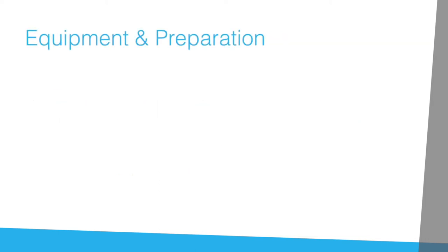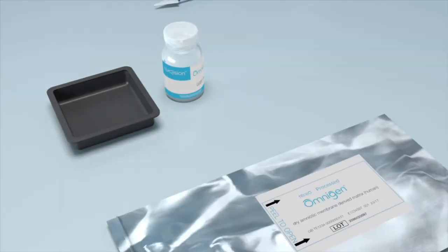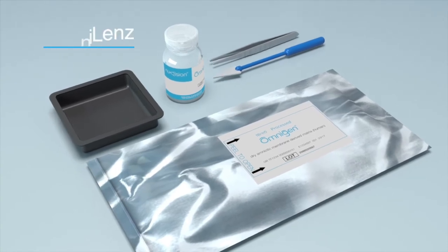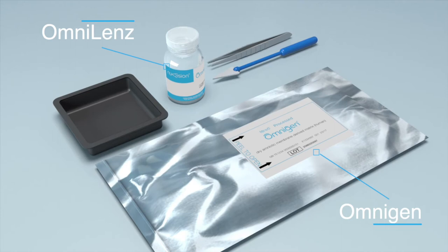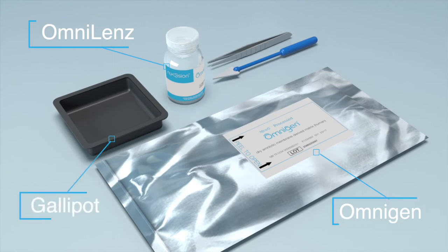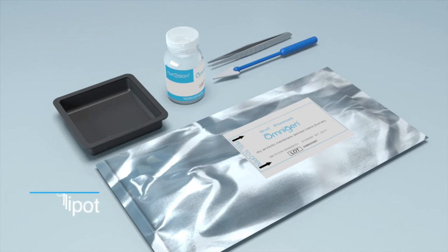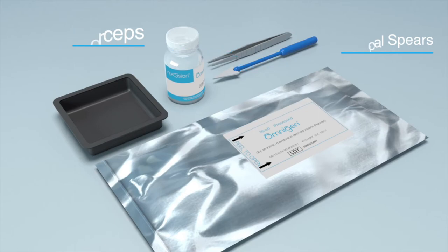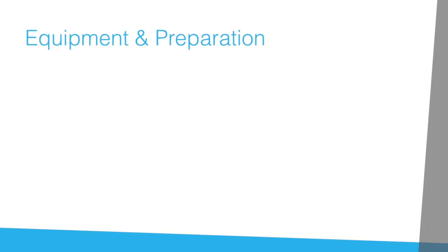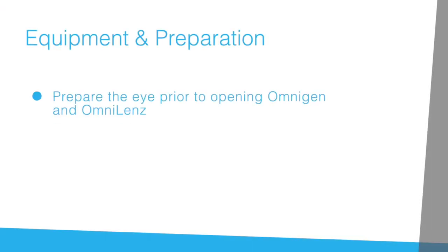So let's get started. To apply Omnigen using OmniLens, you will need: anaesthetic eyedrops, an OmniLens, an Omnigen disc compatible with your OmniLens, a small sterile gallipod, a pair of sterile non-toothed blunt forceps, and a pack of sterile surgical spears. Once you have all your materials, it's time to prepare the eye. This should be done prior to opening Omnigen and OmniLens.